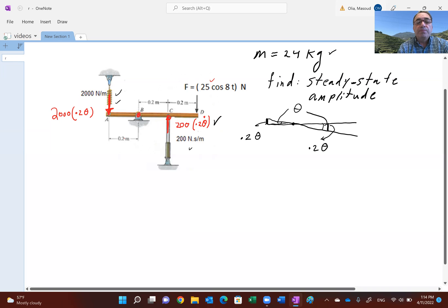We're going to take a moment about B equal to I sub B times alpha. The system is going to be disturbed due to this force in the clockwise direction. The moment of this force coming from the spring is going to be counterclockwise. The force itself is 2000 times 0.2 theta, but you have to multiply it by another 0.2, which is the moment arm. That's negative.